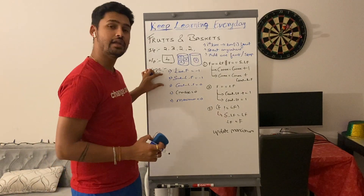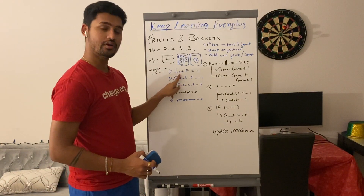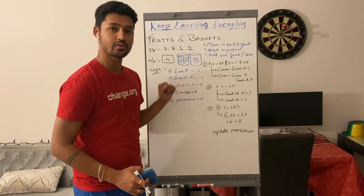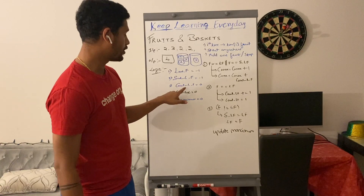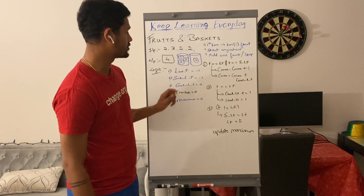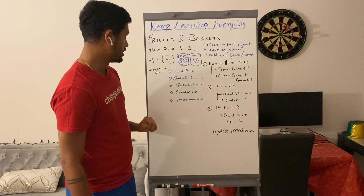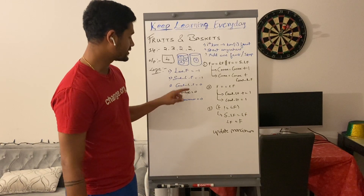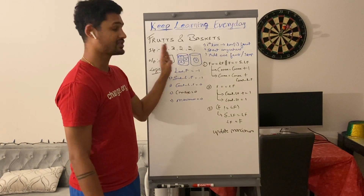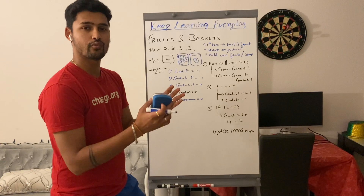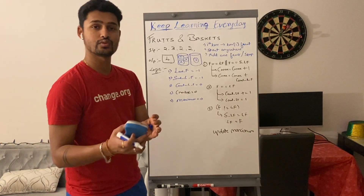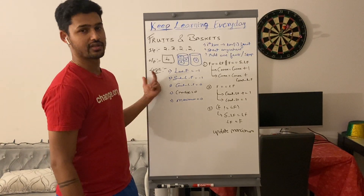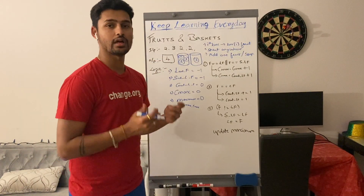We take five different variables. The first one is last_fruit and the second is second_last_fruit, both initialized to -1. We take count_of_last_fruit initialized to 0 since we haven't seen any fruit yet. We also take two variables: current_max for tracking temporary maximums each pass, and maximum which is the value we will ultimately return. We compare current_max to maximum and return whichever is larger.